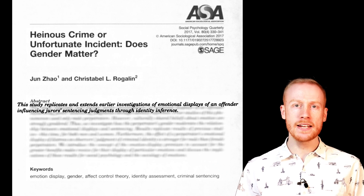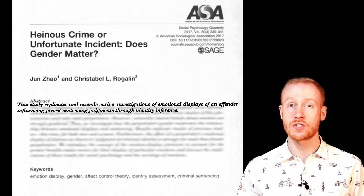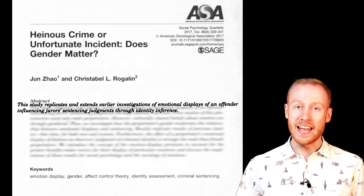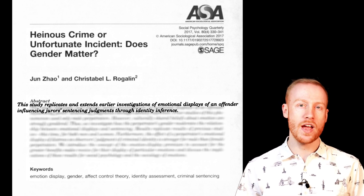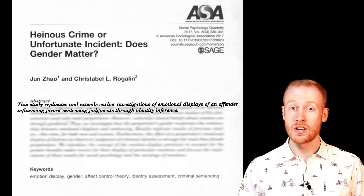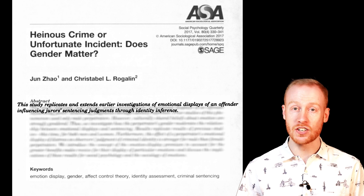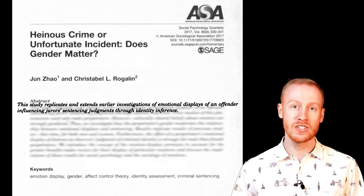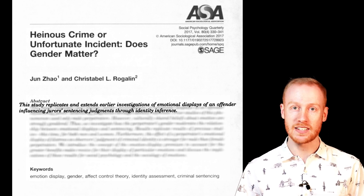The abstract opens: 'This study replicates and extends earlier investigations of emotional displays of an offender influencing jurors' sentencing judgments through identity inference.' A clear opening statement — it clears up any possible misinterpretation of the title and immediately lets us know where this research sits in the field. Some previous research has been done, and no doubt references will be made in the introduction. This study maintains previously used methods, whilst expanding the scope of study to include gender.